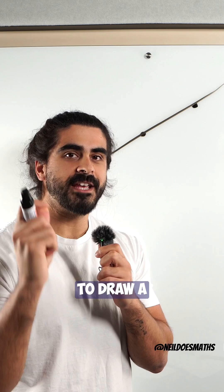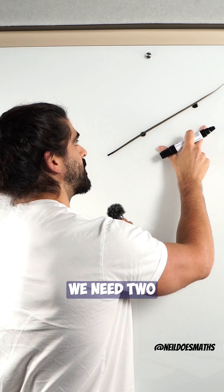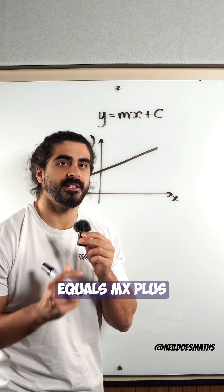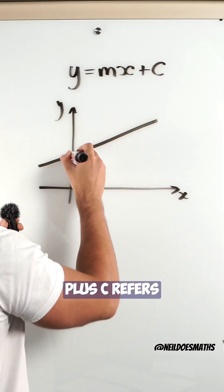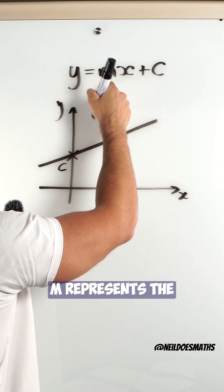Which comes to my first point: to draw a straight line accurately we need two points. All lines are in the form of y equals mx plus c, where the plus c refers to where the line crosses the y-axis and m represents the gradient.